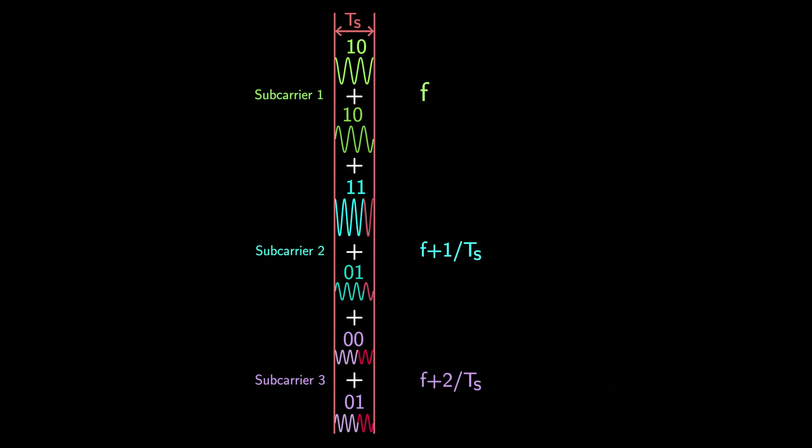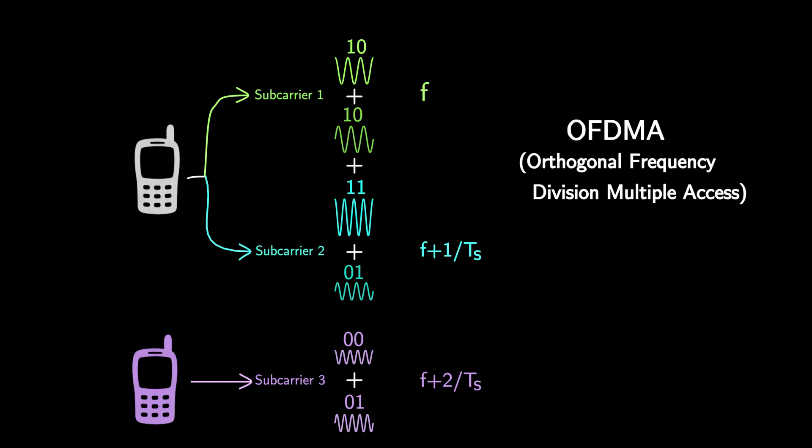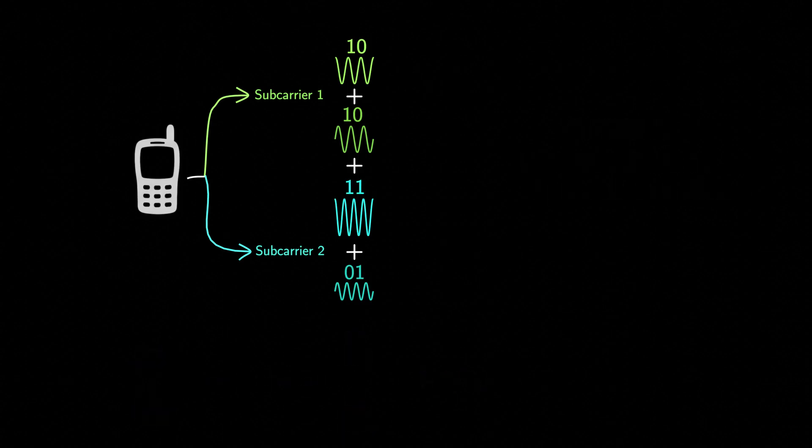It is also possible for multiple transmitters to transmit on different subcarriers simultaneously, a concept called OFDMA. But in this lecture, we'll keep things simple with just one transmitter with two subcarriers. Our transmitter adds all the signals and transmits it.